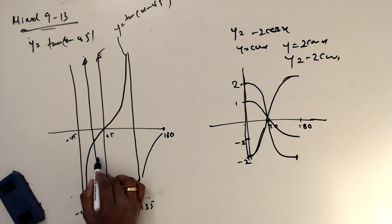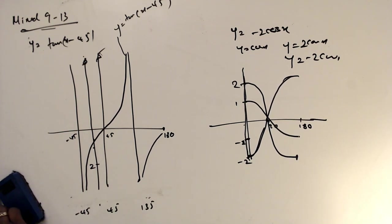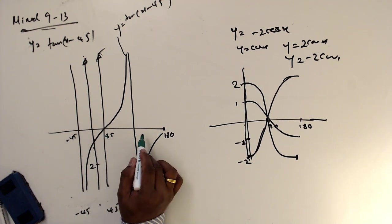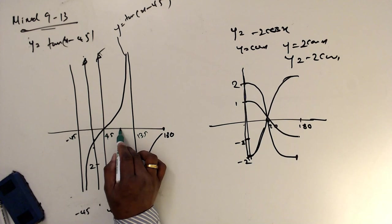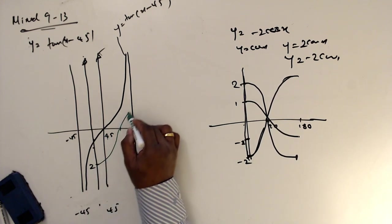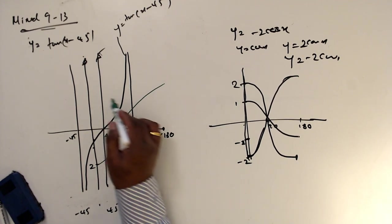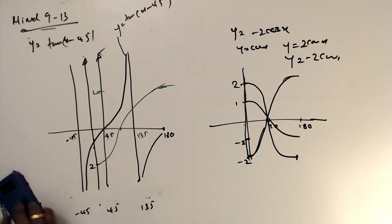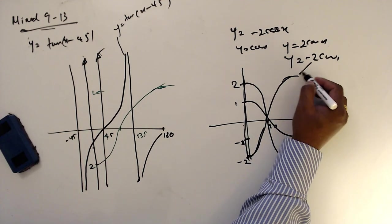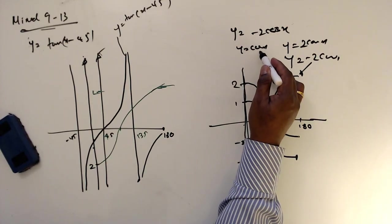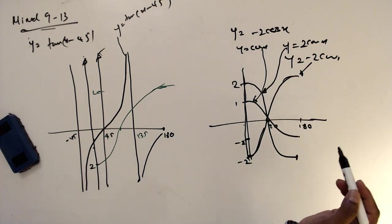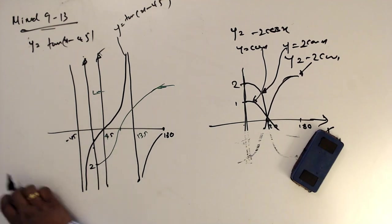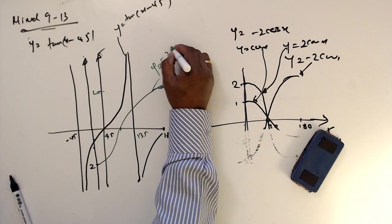So the key points are: at 0 the value is minus 2, at 90 it is 0, at 180 it is plus 2, then back down. This is y equals minus 2 cos x shown on the graph, which is a reflection of y equals 2 cos x in the x-axis.